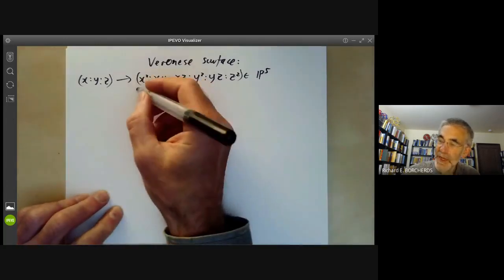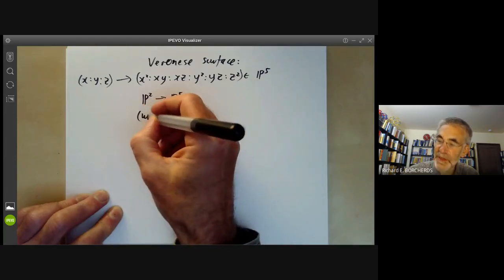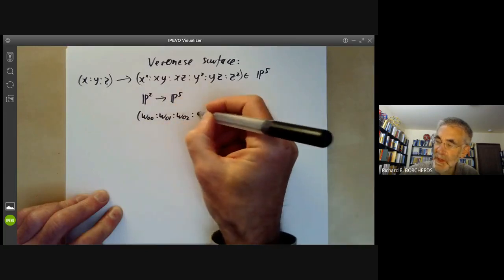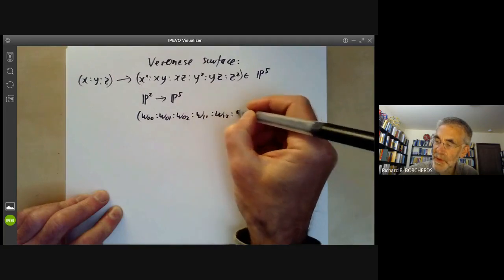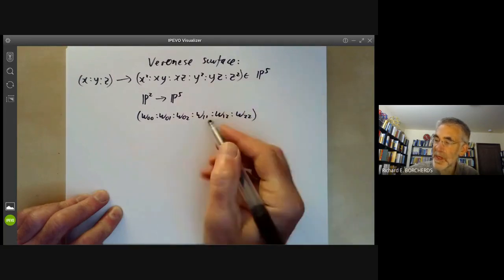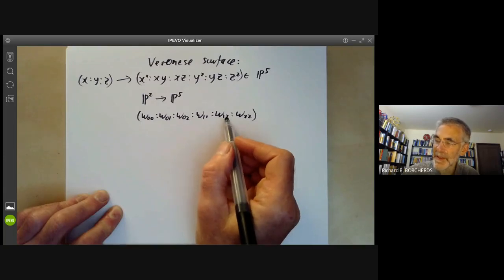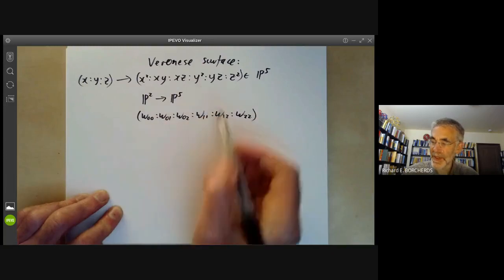Let's write a point of P5 in the following form: W00, W01, W02, W11, W12, W22. For example, W12 corresponds to the fact there's a y and a z where x corresponds to the number 0, y to 1 and z to 2.